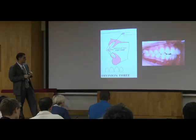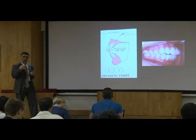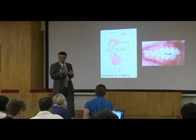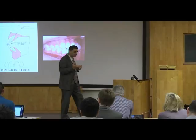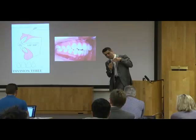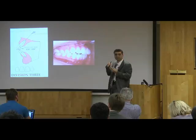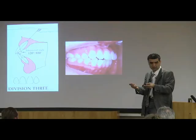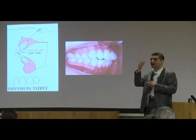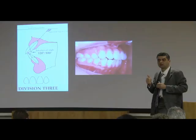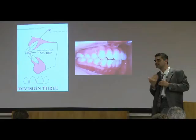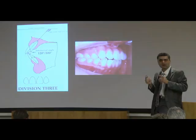Here's another division that Angle didn't even classify. I dislike the term bimaxillary protrusion — unless you were born in Chernobyl, you only have one maxilla. The correct terms are bidental protrusion, meaning your teeth are proclined, or biskeletal protrusion. A lot of Afro-Caribbean patients, when you do their tracing, will have both their maxilla and mandible forward of that arc — that's their common racial type. Division 3 is also common in tongue thrust, in class 3 patients, and in certain racial groups: Chinese, Indian Asian, Spanish Hispanic.